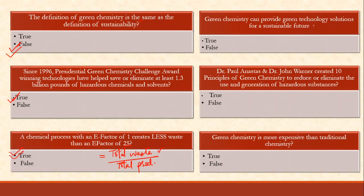Green chemistry can provide green technology solutions for a sustainable future — yes. Dr. Paul Anastas and Dr. John Warner created the principles of green chemistry to reduce or eliminate the use and generation of hazardous substances. However, they created 12 principles, not 10 — so that statement is false. Tricky!